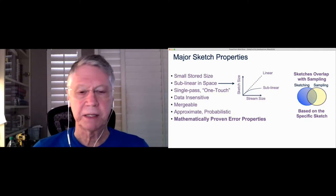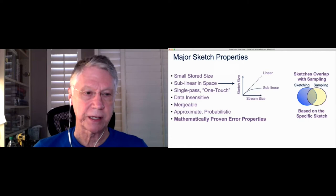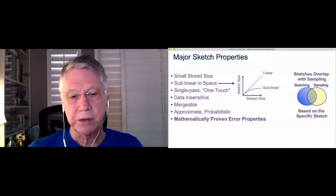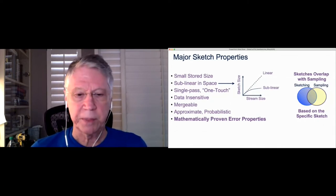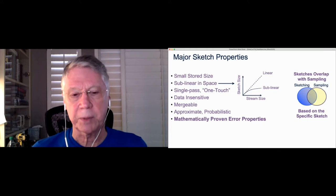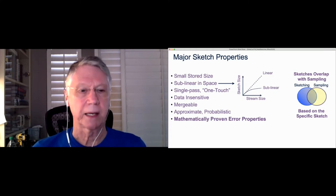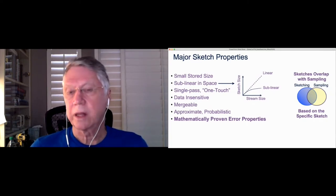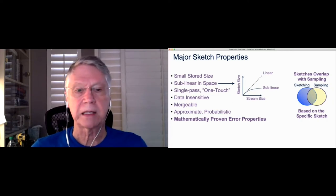And ideally, you really don't need to know much about the data at all, the min, the max, or data range and that sort of thing. Probably one of the most important properties of sketches is that they're mergeable. And the mergeability allows us to process our data in an embarrassingly parallel way. They are, by definition, approximate and probabilistic. And one of the keys to the sketches that we have in our library is that they're all mathematically proven in terms of their error properties.